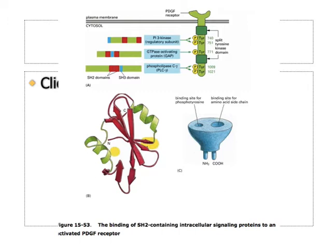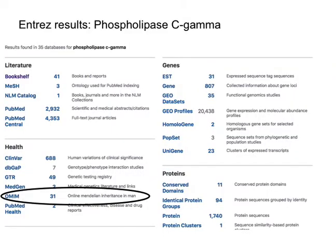I like the NCBI Bookshelf and you can find quite a bit of information about new topics very quickly using that resource. Let's go back to our Entrez results page. After the bookshelf I want to show you OMIM down at the bottom. OMIM stands for Online Mendelian Inheritance in Man — there are 31 results related to our topic in OMIM.